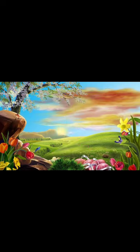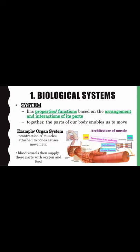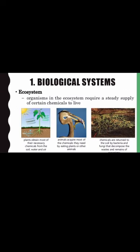The unifying themes in life science are basic ideas that apply to all organisms and connect many things in the exploration of life. Theme 1 — Biological systems: a system has properties and functions based on the arrangement and interactions of its parts. The parts of our body enable us to move. For example, in an organ system: contraction of muscles attached to bones causes movement, and blood vessels supply these parts with oxygen and food.